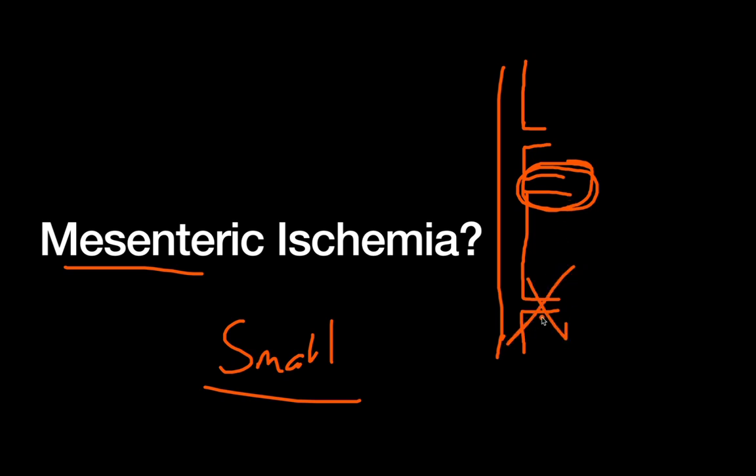Remember, mesenteric ischemia is an issue with blood flow to the bowel in the SMA distribution, which is small bowel or small intestine. This is a four alarm emergency, absolute surgical emergency. If you do not give these patients early diagnosis and treatment, they will almost certainly die. In fact, even with appropriate treatment, most series quote a mortality rate of around 50 to 60%.